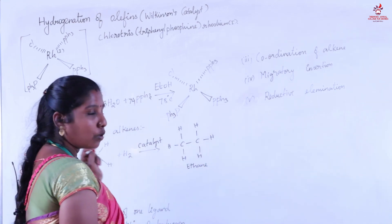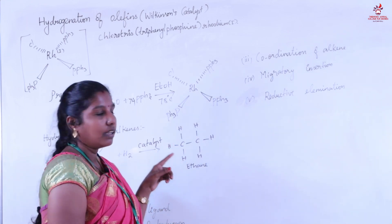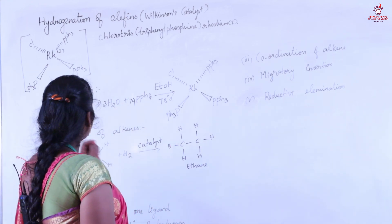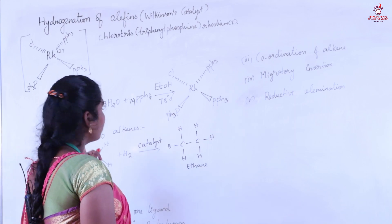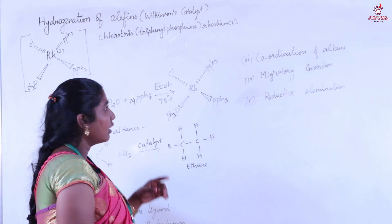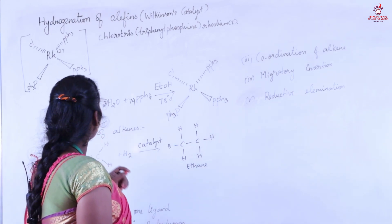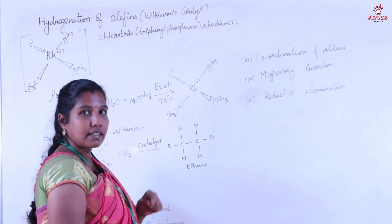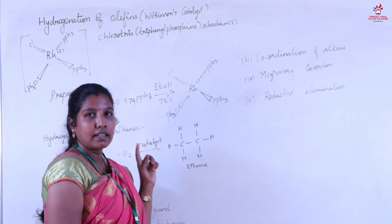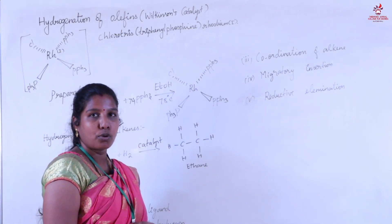It is chlorotris(triphenylphosphine) rhodium(I). Here rhodium has a plus one oxidation state. It is a square planar complex. It is a 16-electron complex. Its color is red-violet crystalline solid.